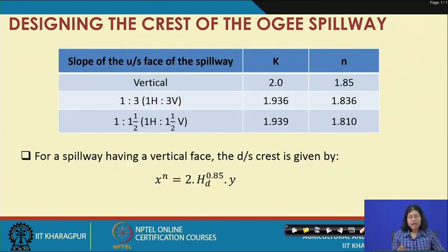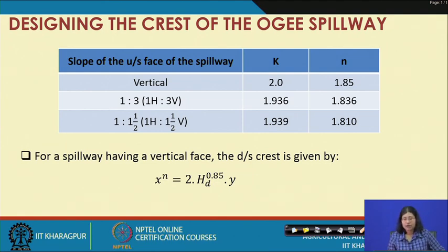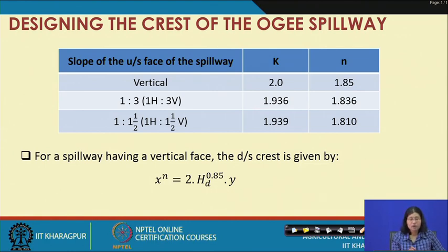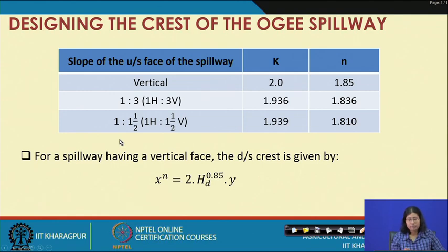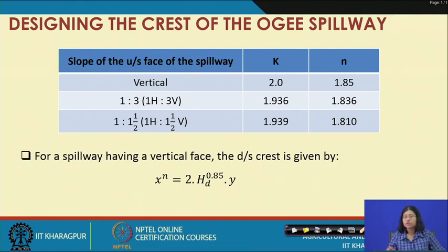The slope of the upstream face of the spillway can be varied, and depending upon this shape, k and n values are also varied. For a vertical face (90 degree angle), k is 2 and n is 1.85. For a 1:3 slope (1 horizontal and 3 vertical), k is 1.936 and n is 1.836. For a 1:1.5 slope (1 horizontal and 1.5 vertical), k is 1.939 and n is 1.810. Depending upon the kind of problem, generally these values are given beforehand.